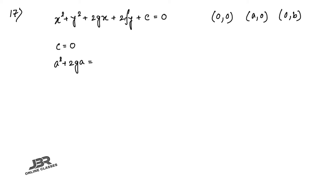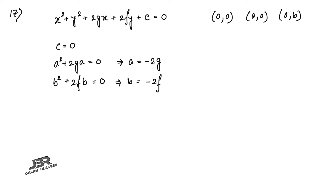Similarly, putting x = 0 and y = b gives b² + 2fb = 0. From these we get a = −2g and b = −2f. So the equation of the circle becomes x² + y² − ax − by = 0 (since 2g = −a, 2f = −b, and c = 0). That is your final equation for sum 17.